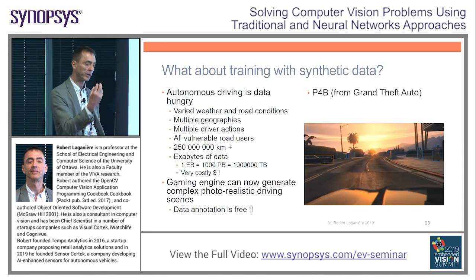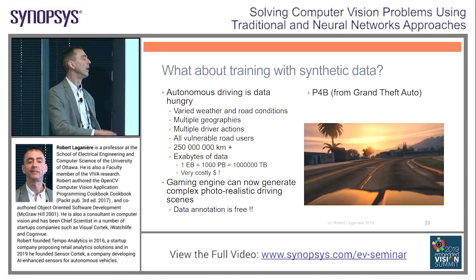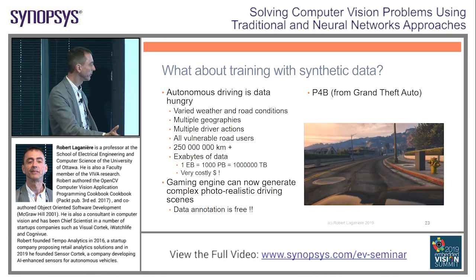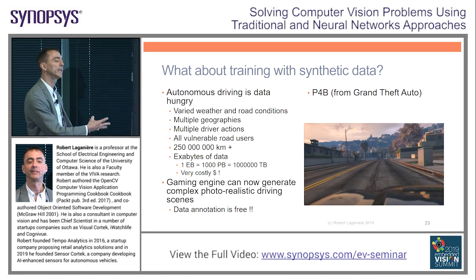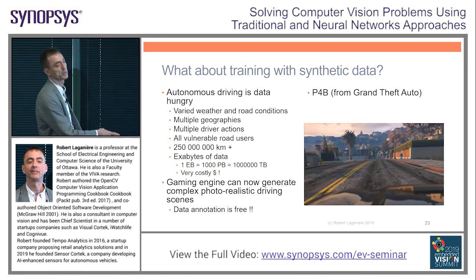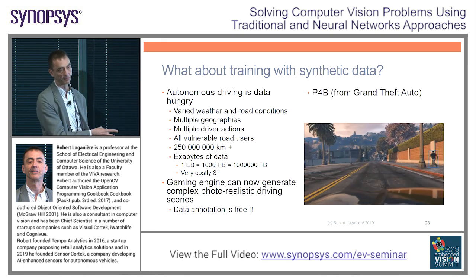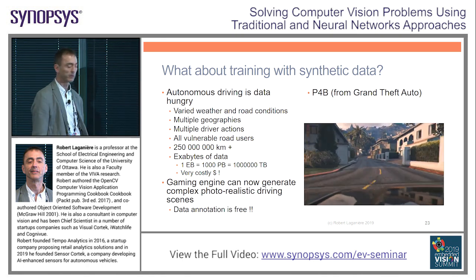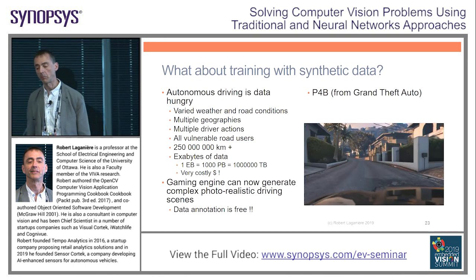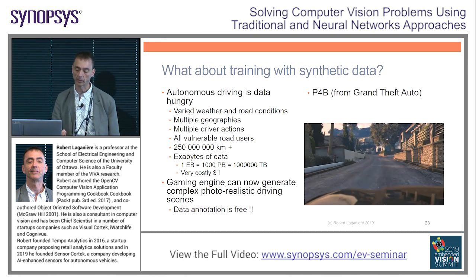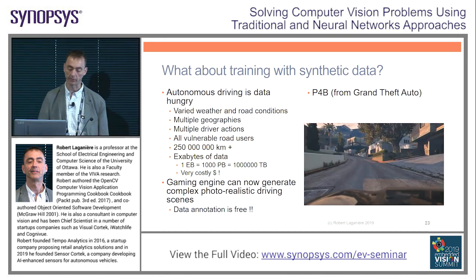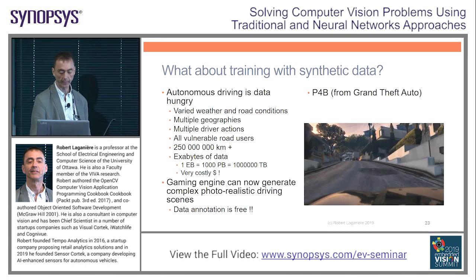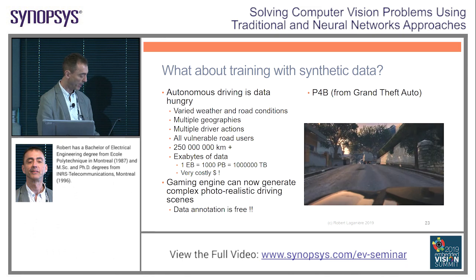You know where the objects are, where your pedestrians are, etc., so you get the data annotation for free. This is a very costly part if you have to do it manually, so having it for free is really a great benefit.